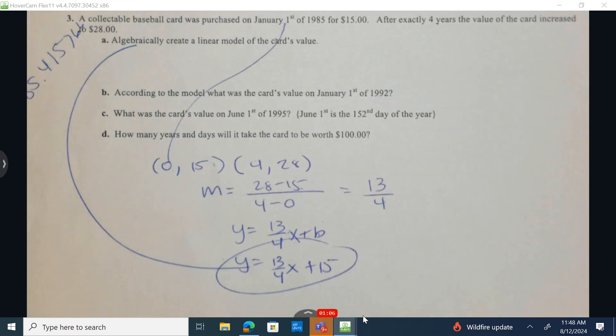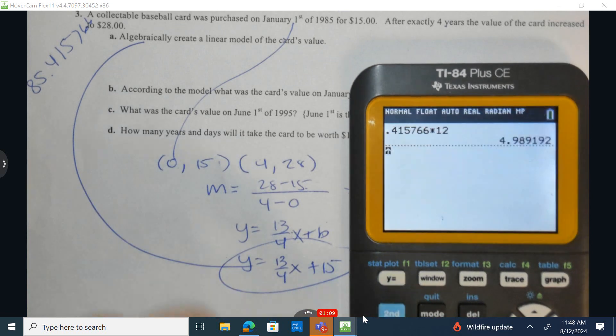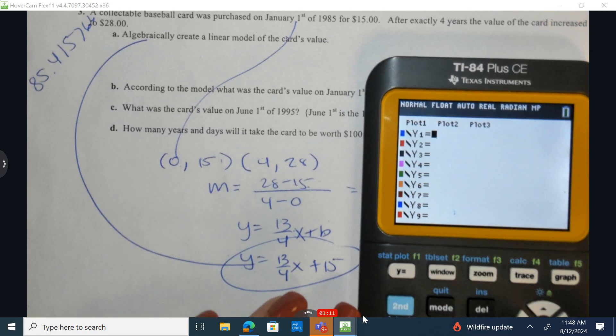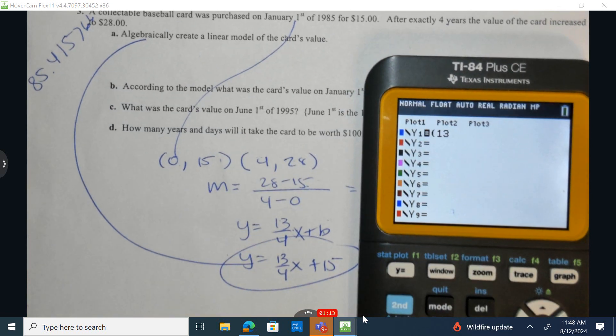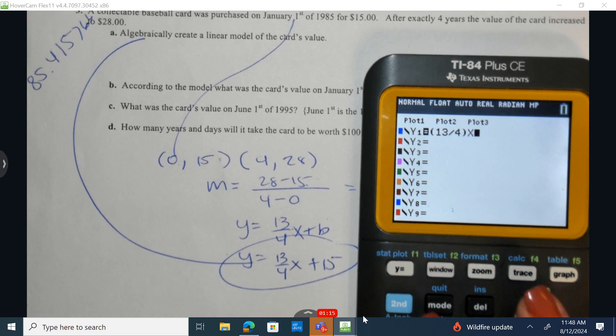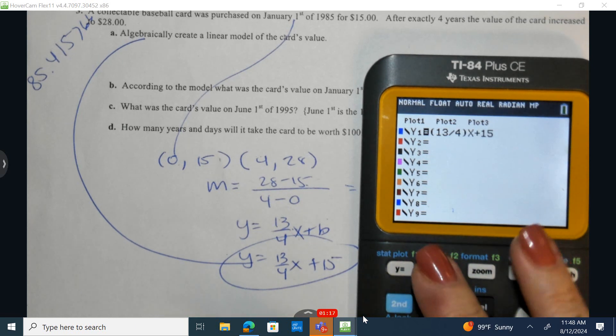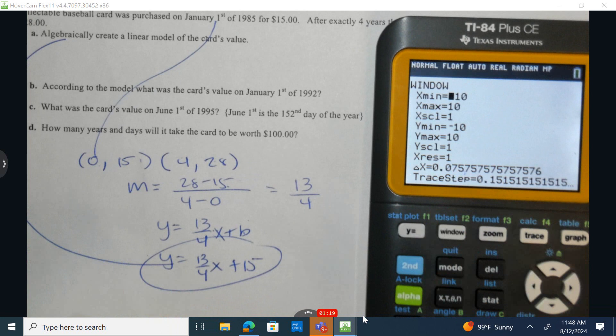This is going to be the algebraic model. Now I can grab my graphing calculator, and I'm going to reset it here, and I have 13 fourths x plus 15. Now let's go and let's change our window.